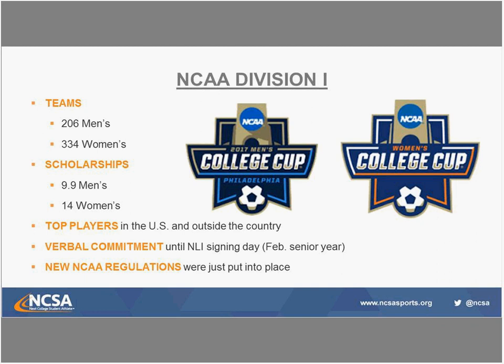Division I is the one most people know about — it's often the goal for any athlete who wants to compete collegiately. On the men's side, there are 206 programs in total nationwide, which really only makes up maybe 15 to 20 percent of the overall collegiate soccer programs in the United States.